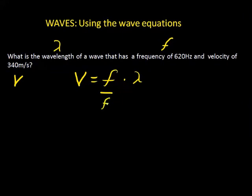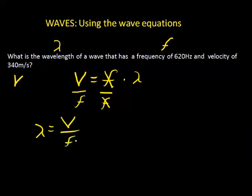Our procedure is to isolate lambda because that's what we're looking for. We divide frequency out of both sides of the equation, and frequency factors out. Our new equation says: wavelength lambda equals velocity divided by frequency.